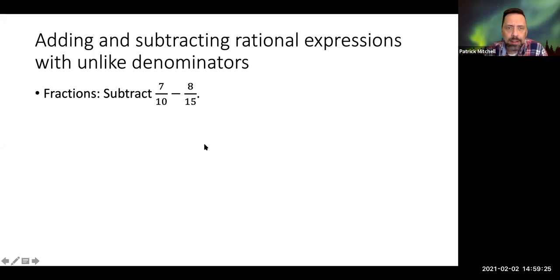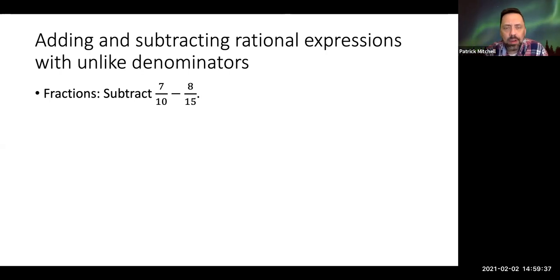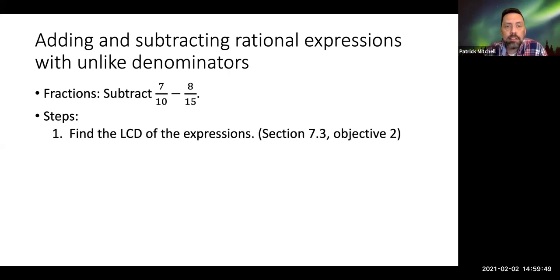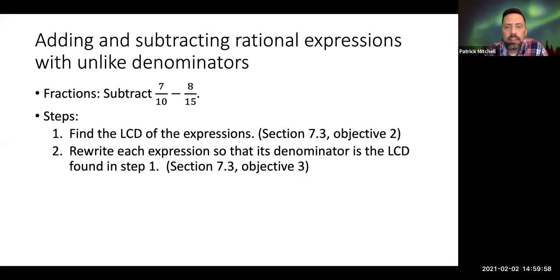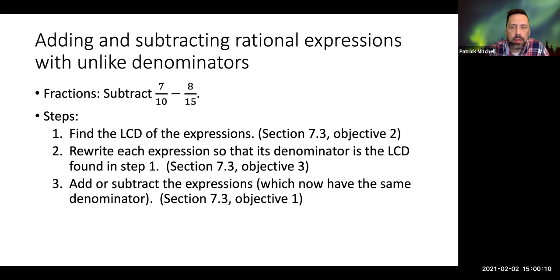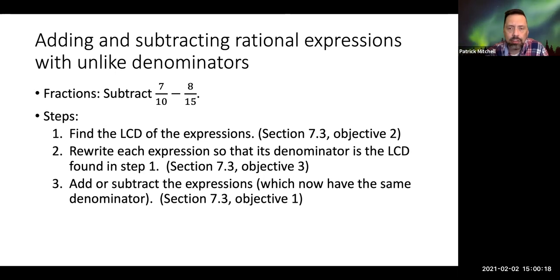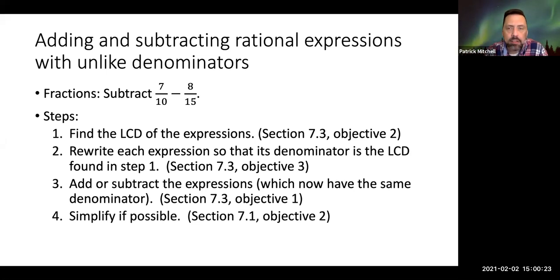So as usual, let's talk about simpler, happier times. The regular fraction version of this is something like subtracting 7 tenths minus 8 fifteenths. The steps are going to be the same when we throw X's and Y's into the mix. Step one: find the least common denominator, which we went over in the last section. Step two: rewrite each expression so that its denominator is the LCD you just found. Step three: add or subtract the expressions, which now have the same denominator. And then finally, simplify your answer if you can.